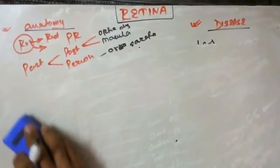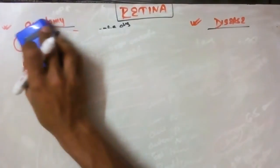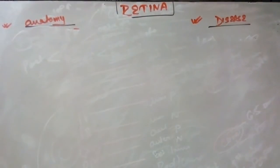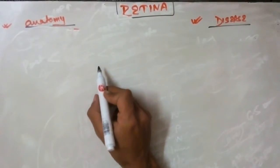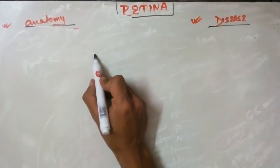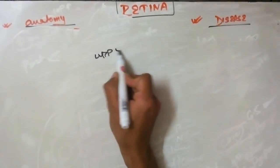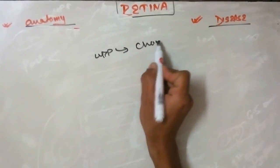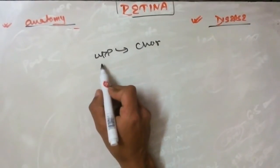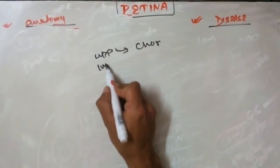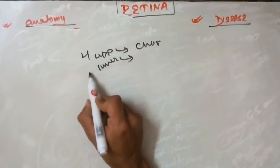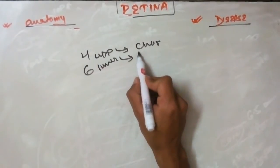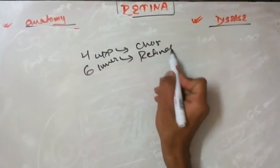Specifically, one should know that the anterior upper four layers of the retina and the six layers are supplied by the retinal artery. Talking about venous drainage, it drains via the same vein into the ophthalmic vein.